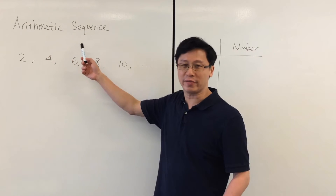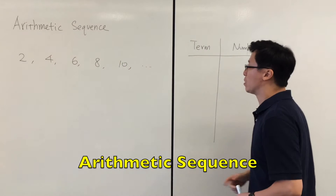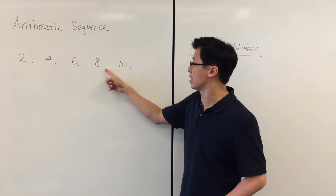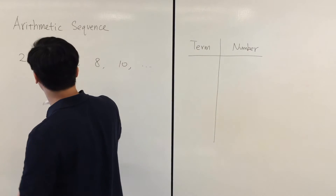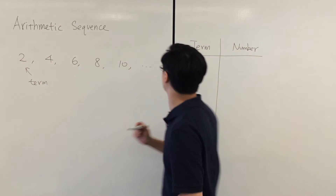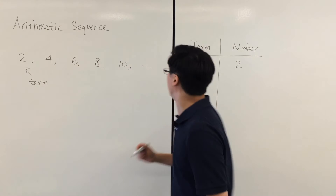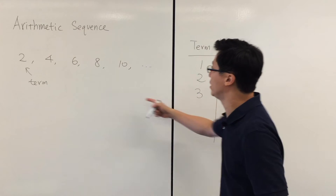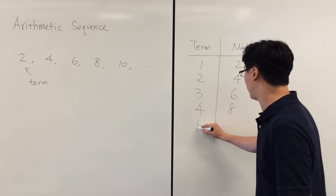Let's look at some other kinds of number patterns. We call this an arithmetic sequence. Suppose we have a number pattern like this: the first one is two, second one four, six, eight, ten, and so on. We give each of them a name — each is called a term. So the first term is two, the second term is four, the third term is six, the fourth term eight, the fifth term ten.